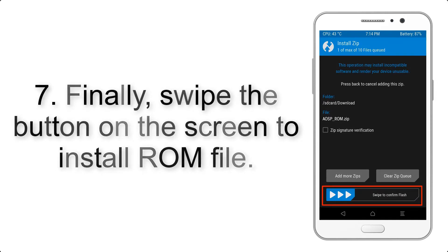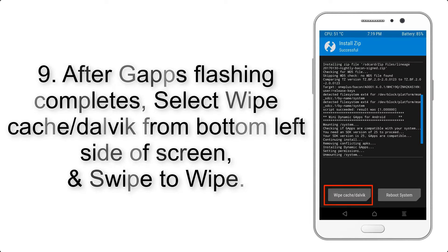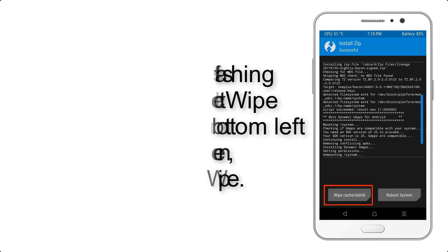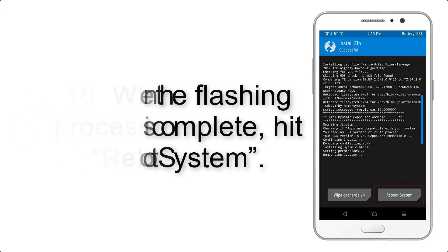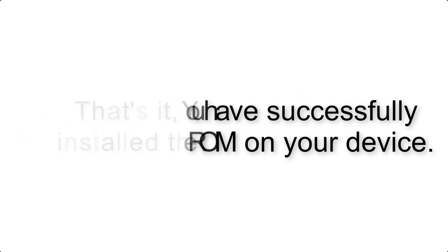Step 9: After GApps flashing completes, select Wipe Cache and Dalvik from the bottom left side of the screen and swipe to wipe. Step 10: When the flashing process is complete, hit Reboot System. That's it — you have successfully installed the ROM on your device.